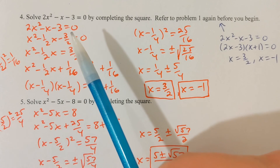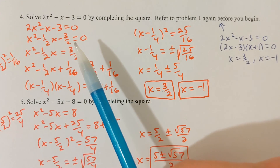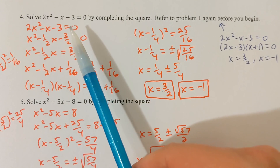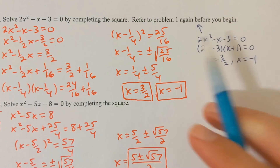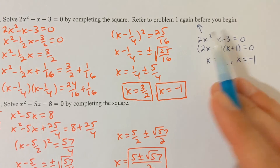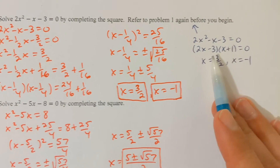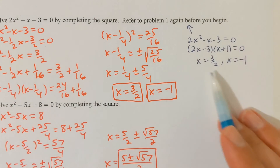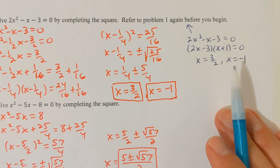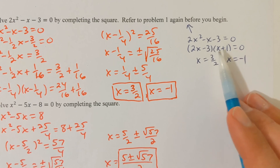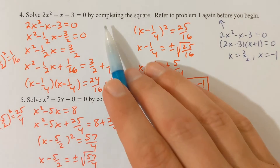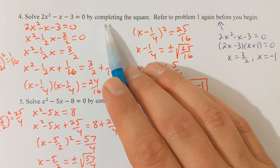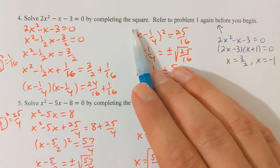I've got that same equation written again here, and I've also made a note to refer to problem 1. Now I'm going to show you how to solve this equation again, but by using the completing the square method.